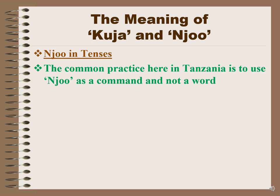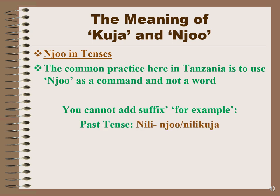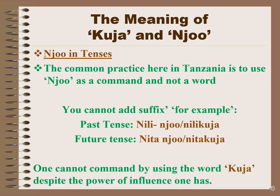The common practice in Tanzania is to use joo as a command word only — you cannot add a suffix to it. For example, for the past tense you cannot say nilijoo; you would say nilikuja, meaning 'I came.' In the future tense you cannot say nitajoo; you would say nitakuja. One cannot command by using the word kuja.